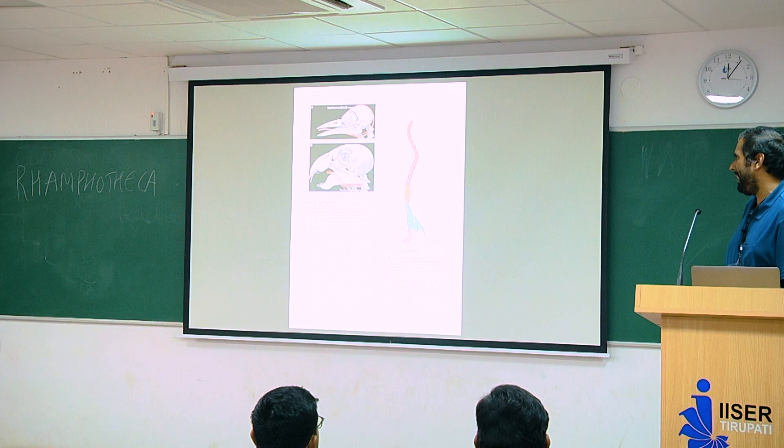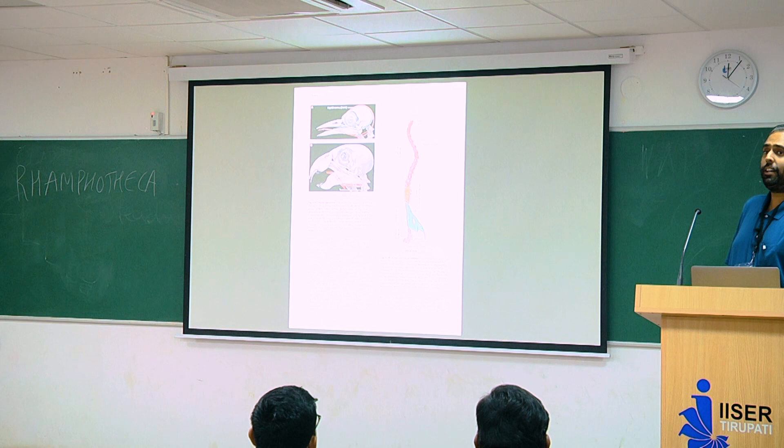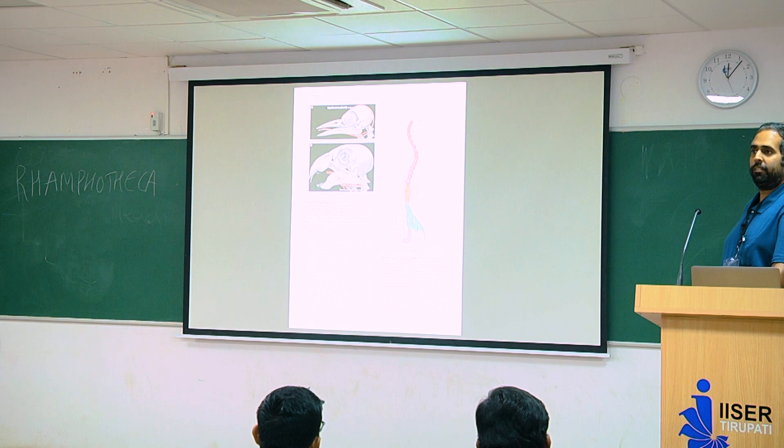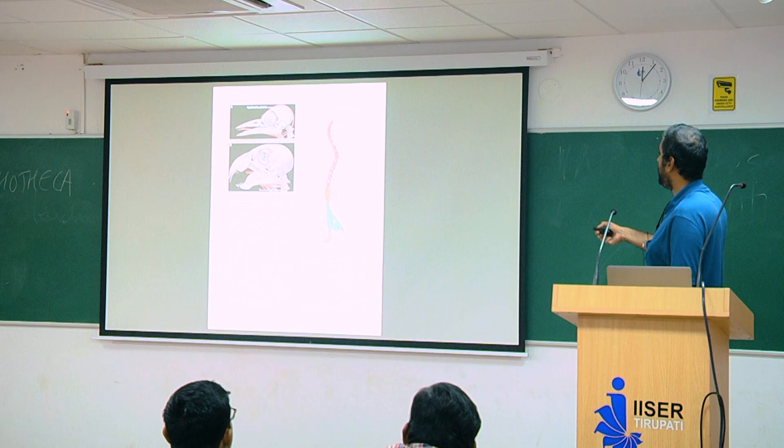Once we move past the cranial skeleton, we've got the axial and appendicular skeletons. What is the axial skeleton? Along the axis — the vertebral column. In that case too, you see a bunch of fusions of bones.